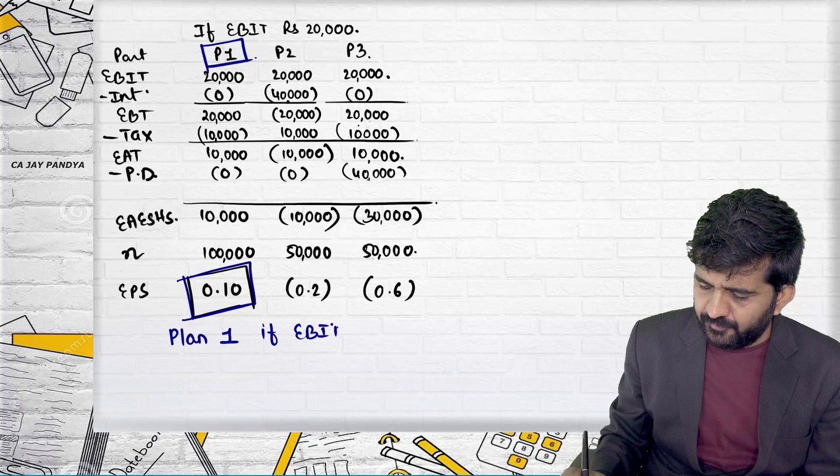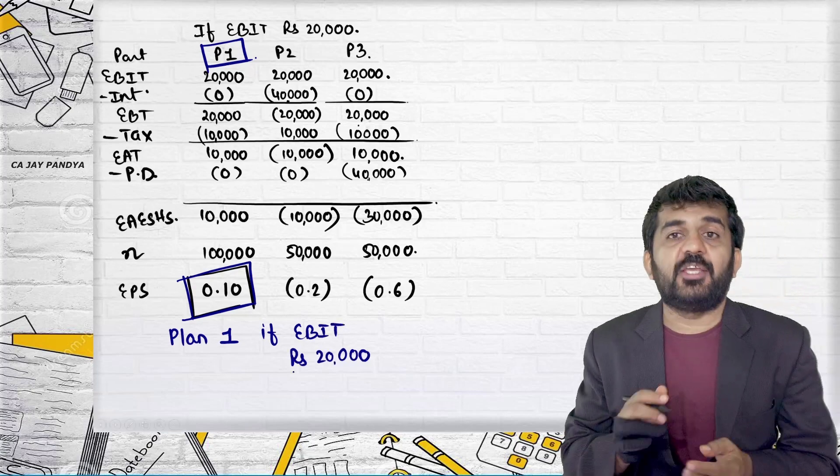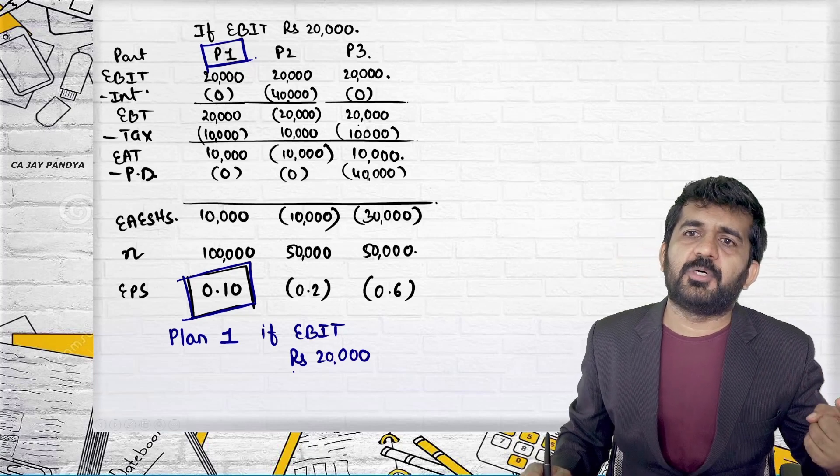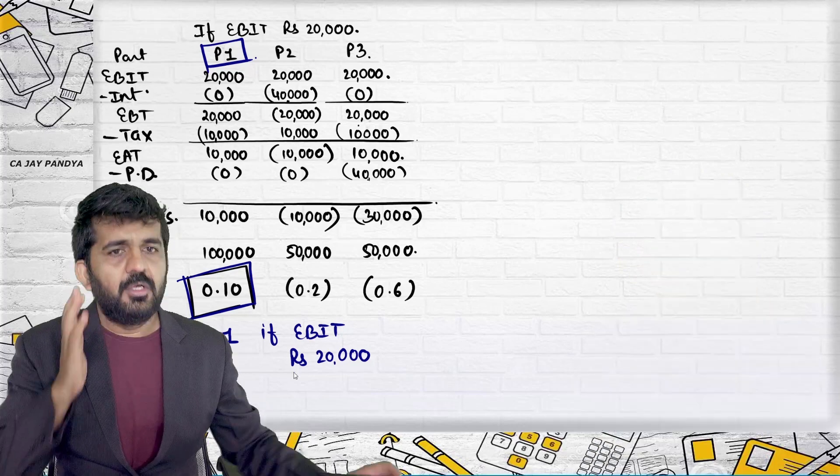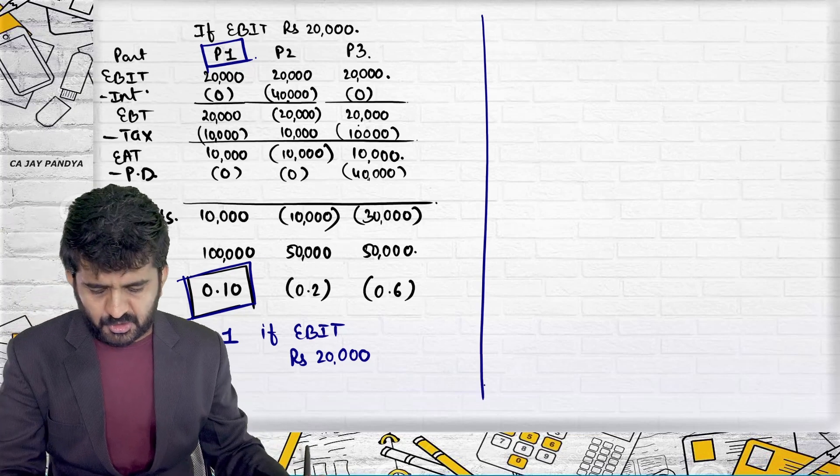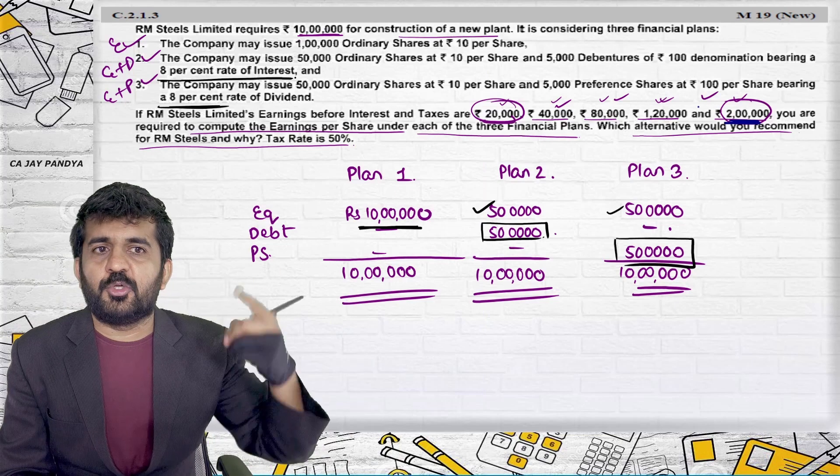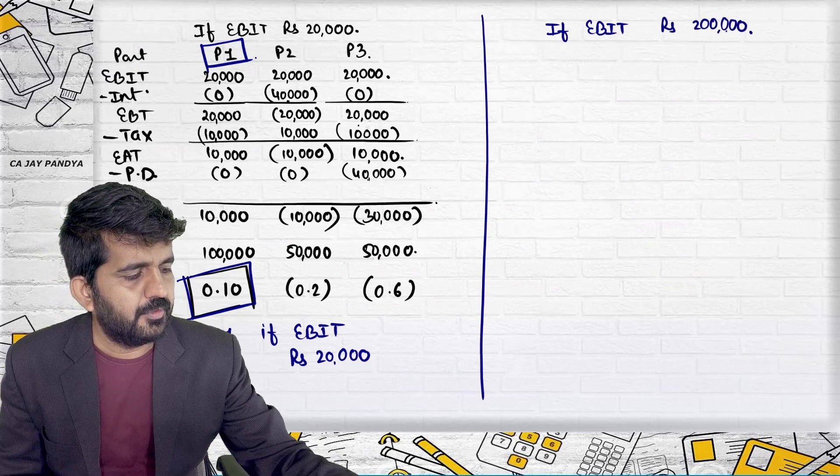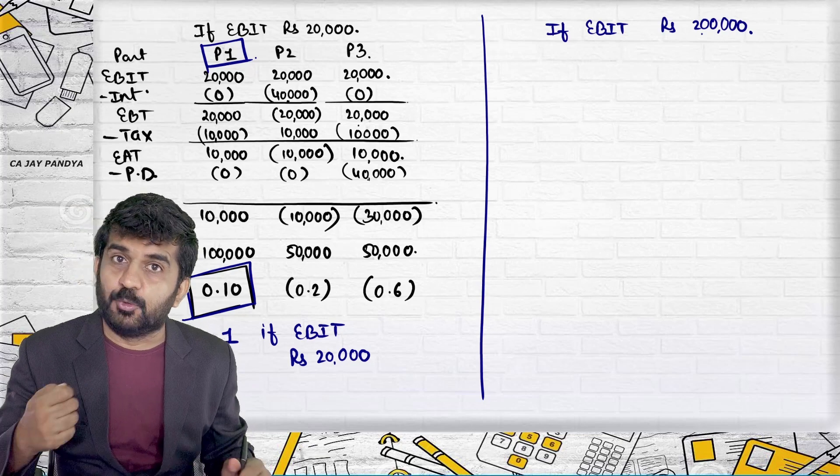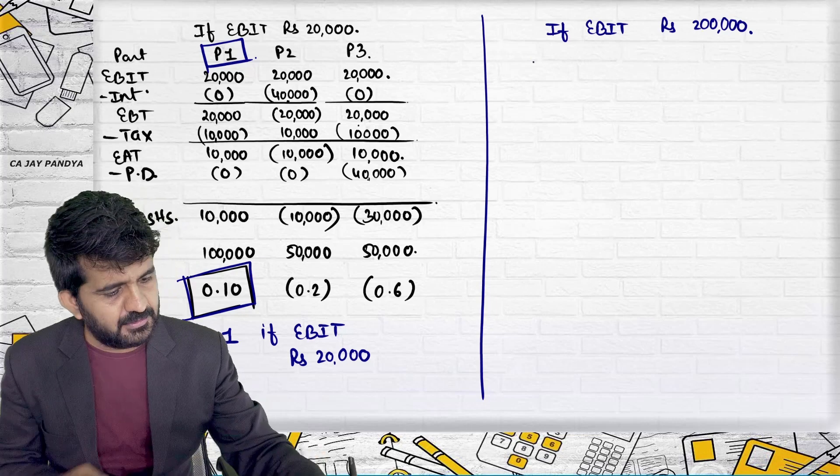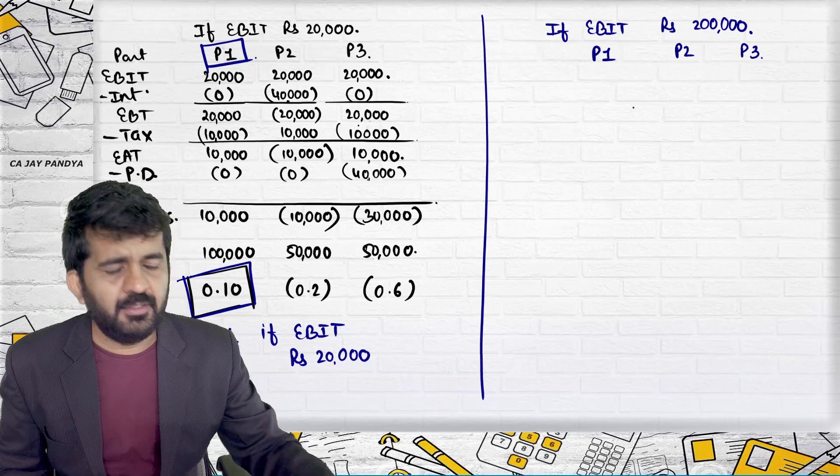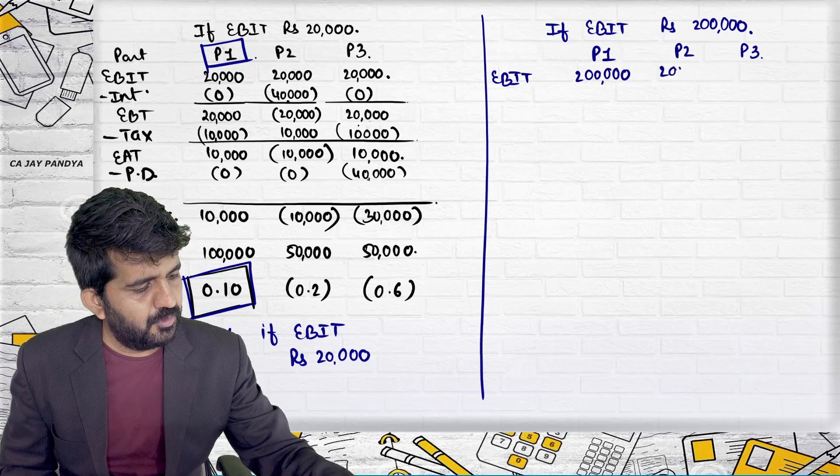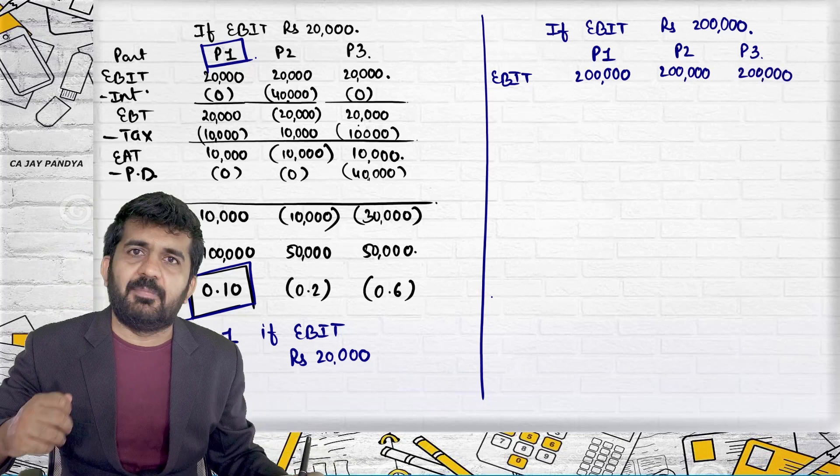If your EBIT will be rupees 20,000, say you have hired an economist who says that your EBIT is going to be 20,000. If you start this project, you should borrow 100% from equity. That is you should be having your own money. Let us go to another option. Last option. If EBIT is 2 lakhs. All other you need to do on your own. If EBIT is rupees 2 lakhs, I know plan answer. Plan will be 2. 99.99% plan will be 2. Plan 1. Plan 2. Plan 3. EBIT 2 lakhs. 2 lakhs. Because your total borrowing will be 10 lakhs in any of the plan.